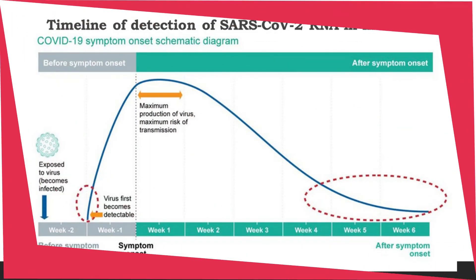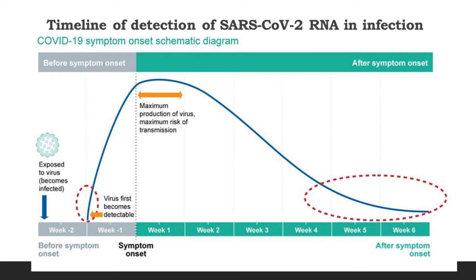Let us consider a person is exposed to the virus, that is SARS-CoV-2, and he becomes infected, but he doesn't develop any symptom in the first week after exposure. In the second week of exposure, the virus has been at a detectable level, but still the person doesn't develop any symptom of SARS-CoV-2.